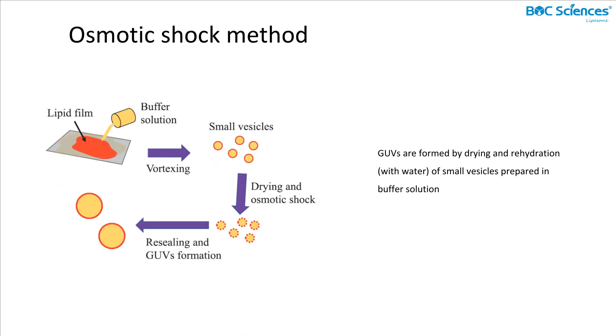Seventh, the osmotic shock method. This method aims to form GUVs from SUVs. SUVs are prepared by the conventional method, followed by being dried and rehydrated with deionized water. Then GUVs are formed by triggering SUVs due to the osmotic shock. Thus, this process is repeated until the desired GUVs are obtained.